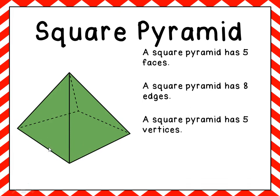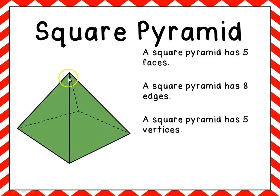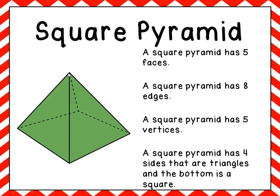A square pyramid has five vertices — one, two, three, four, and five right at the point. A square pyramid has four sides that are triangles, and the bottom is shaped like a square.